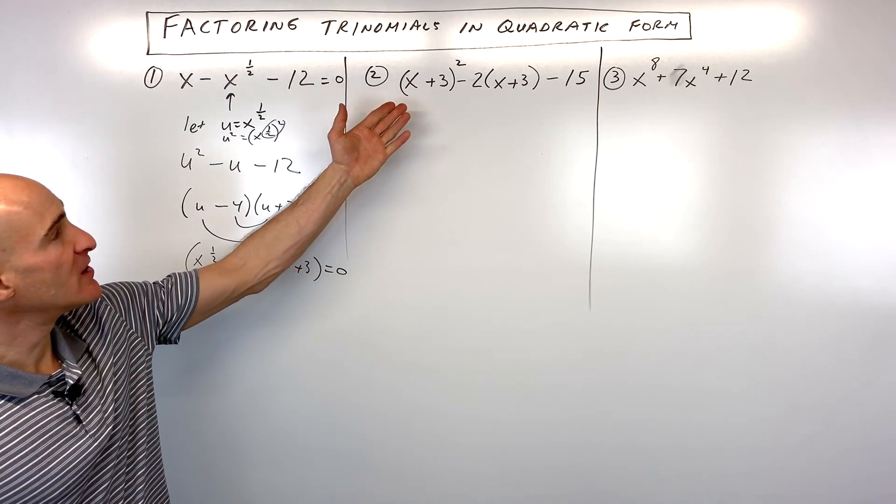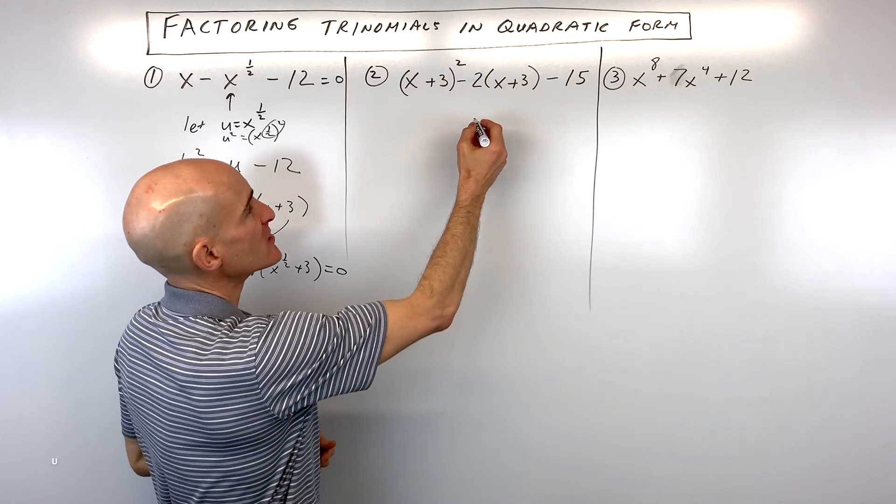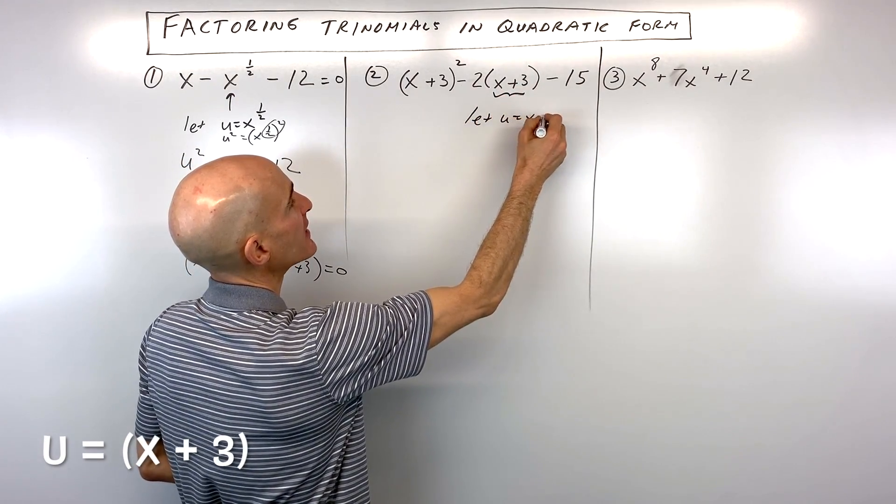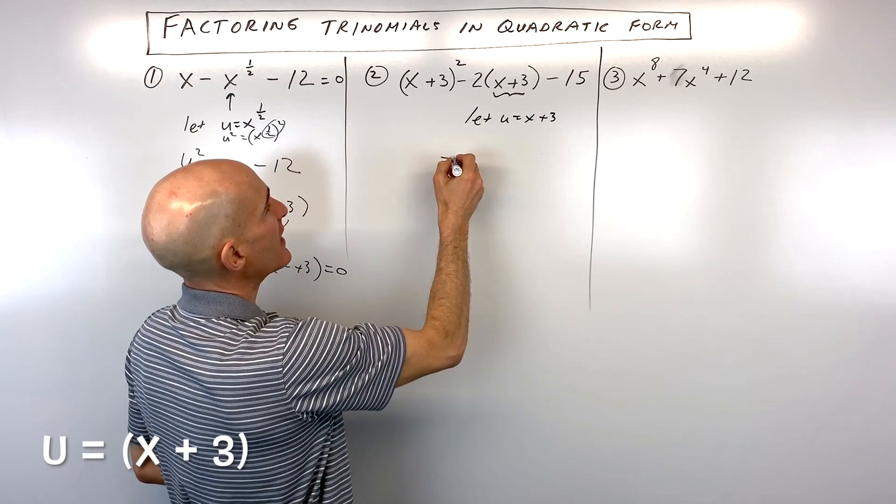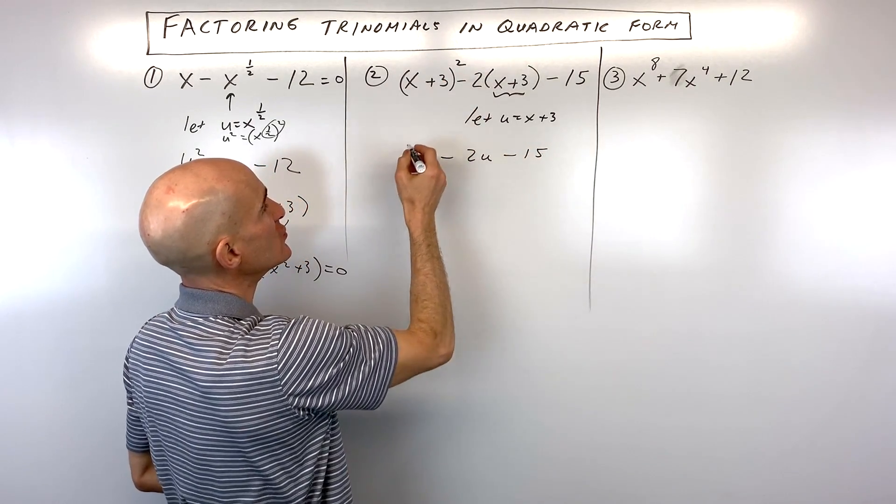Let's go to example number two, see if you can do this one. So this one, what I would do, if I was doing a u substitution, is I would say let u equal this middle group here, x plus three. So that means that we have minus two u minus fifteen, and then this is u squared.